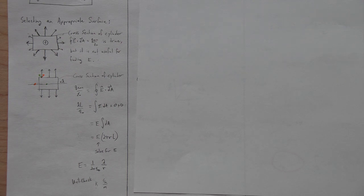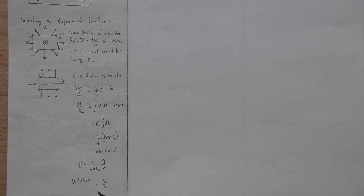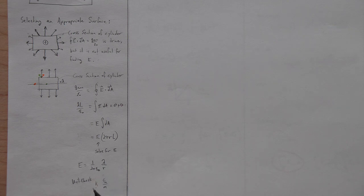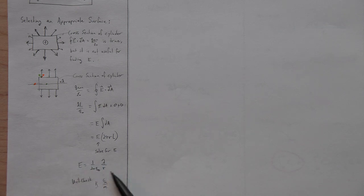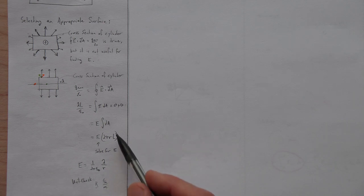When you get your answer, it's worthwhile to do a unit check. From E = kQ/r², the electric field has units of k·coulombs/meter². Since 1/(2πε₀) has the same units as k, which is 1/(4πε₀), lambda in coulombs per meter divided by radius in meters gives k·coulombs/meter². This formula has the right form. If you had r² instead of r, you'd catch that error and go back to find the correction.